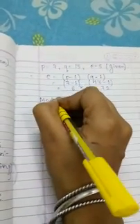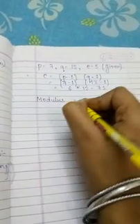Now we will find the modulus, and the formula for modulus N is equal to P into Q. It is very simple. So P into Q equals 91.